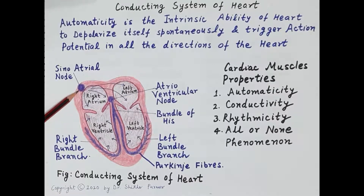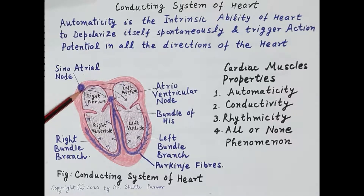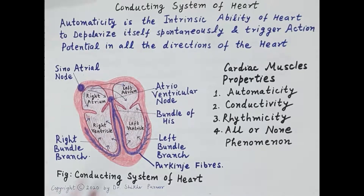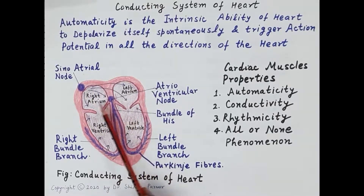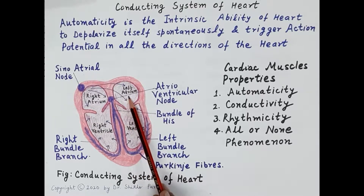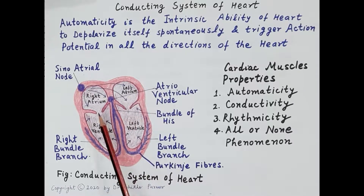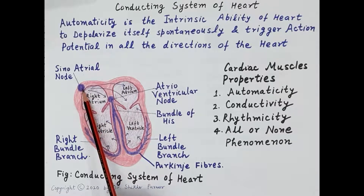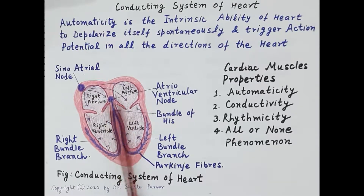First is the SA node or sinoatrial node. The SA node depolarizes and generates action potentials or impulses at a rate of 60 to 80 impulses per minute. It is located in the wall of the right atrium and is called the pacemaker of the heart. Impulses from the SA node sweep over the entire wall of the atrium so that both atria contract simultaneously. The time taken by the action potential to travel from the SA node to the AV node is about 0.1 second.